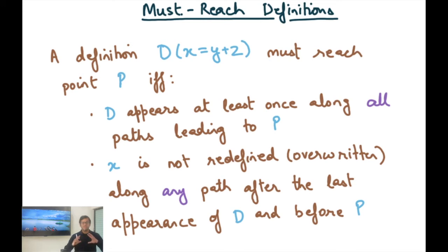Okay, so now I am going to just change this analysis slightly just to show how these small differences can give you different analyses completely. So let's say I define an analysis called must-reach definition, and must-reach is defined as follows. A definition D, x equals y plus z, must reach program point P if and only if D appears at least once along all paths leading to P and x is not redefined, in other words D is not killed along any path after the last appearance of D and before P.